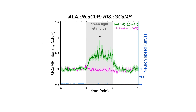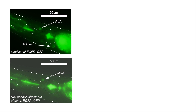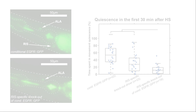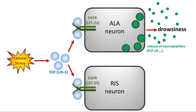To test whether EGFR can also activate RIS directly, we generated a conditional allele of the EGFR gene and knocked down EGFR specifically in RIS. This led to a strong reduction of sleep following the heat shock, indicating that EGFR activates RIS directly. These data suggest that upon cellular stress, EGFR activates the EGF receptor in both ALA and RIS. ALA causes drowsiness behavior that includes a cessation of feeding and promotes sleep bouts by activating RIS, while RIS in turn is the inducer of acute sleep bouts.